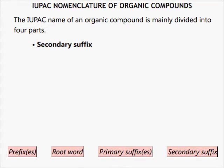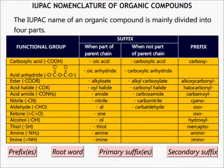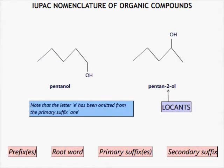Number four: secondary suffixes. This indicates the main functional group in the parent chain. The following table shows a list of functional groups in the order of decreasing priority. More often than not, the secondary suffixes are also preceded by locants.